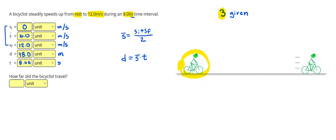Alright, so how far does a bicyclist travel? We just answered that. How far is distance? So 48.0 meters.